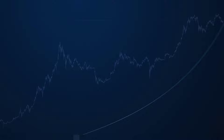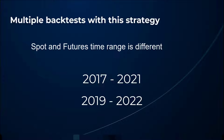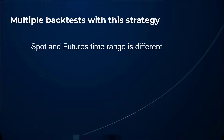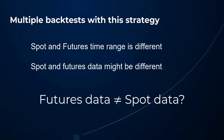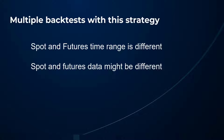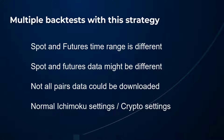Before I continue with the actual backtest results, I first have to give some additional information on the backtest procedure I followed. First of all I had to consider the different backtest time frame the futures data consists of. My normal backtest time frame is from 2017 to the end of 2021, but the futures data starts at 2019 because earlier data is not available on Binance. Futures data and spot data might also be different since I specifically had to download futures data. I also could not download all pairs data, and I wanted to test both normal Ichimoku settings and those advised for crypto trading.